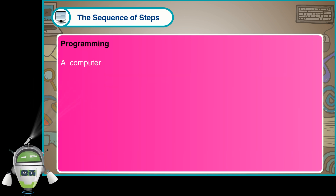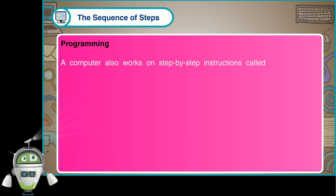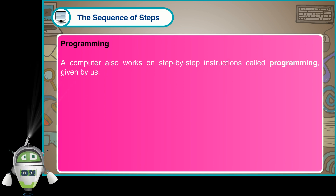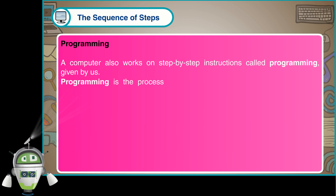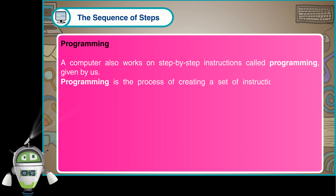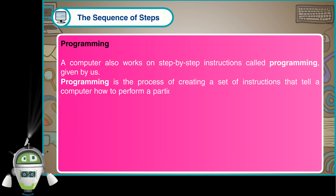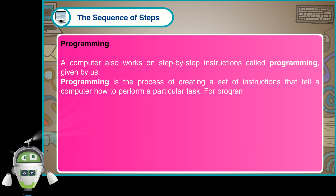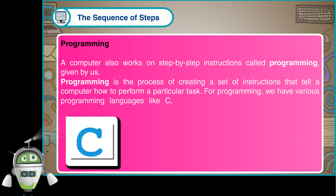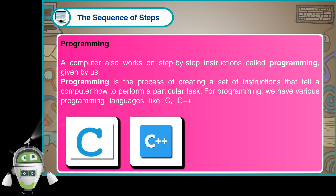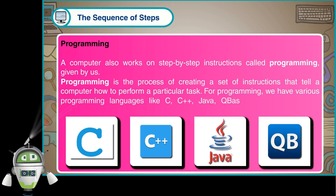Programming: A computer also works on step-by-step instructions called programming, given by us. Programming is the process of creating a set of instructions that tell a computer how to perform a particular task. For programming, we have various programming languages like C, C++, Java, QBasic, and much more. A programmer writes programs for the computer.